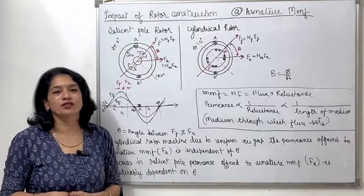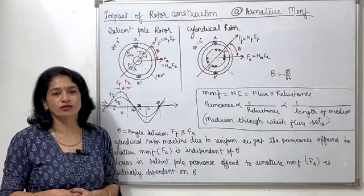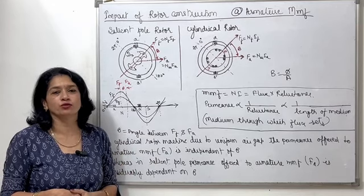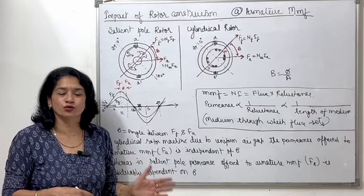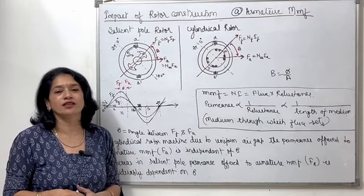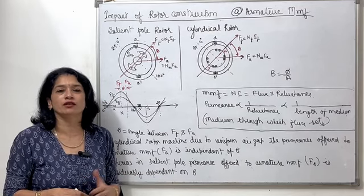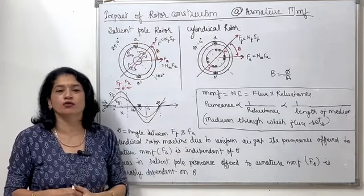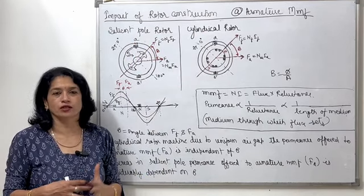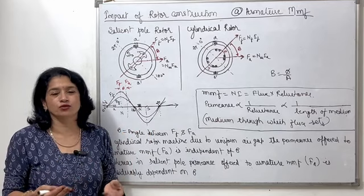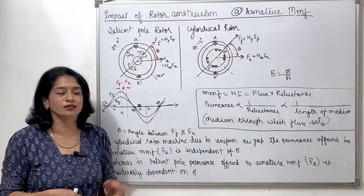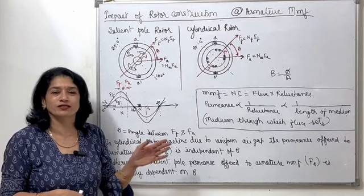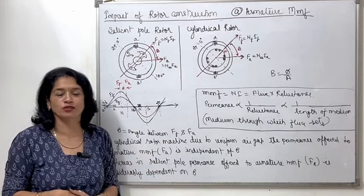This particular topic comes under the construction of synchronous machines, and I have published two videos related to this — one was related to stator and stator frame, and later I started with the difference between the rotor constructions: salient pole rotor construction and cylindrical rotor construction. There I have listed six to seven or maybe eight differences. Just add up this difference as the next entry in that particular tabular format.